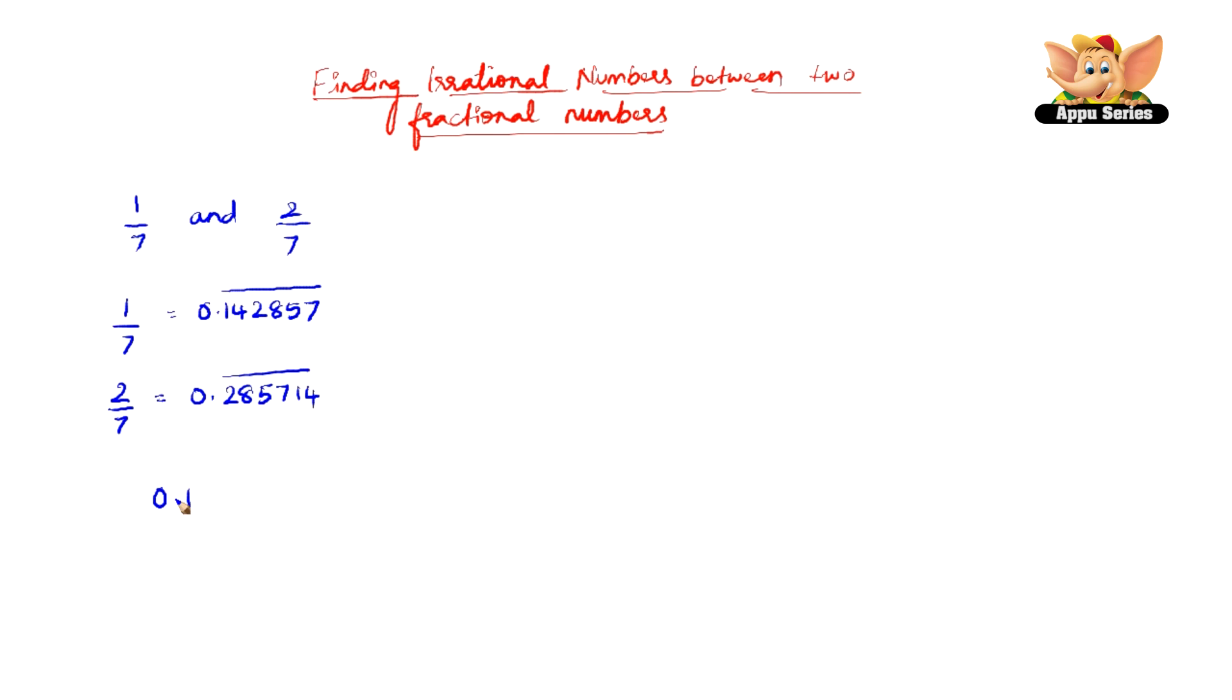So all we have to do is write a number greater than 0.142857. So I'll write 0.1500123971001 and it goes on. So this number is greater than 0.142857 and is less than 0.285714, and more importantly this number is an irrational number.